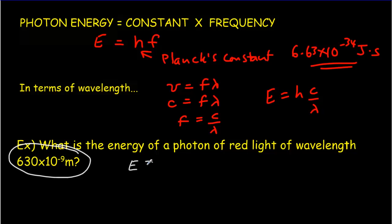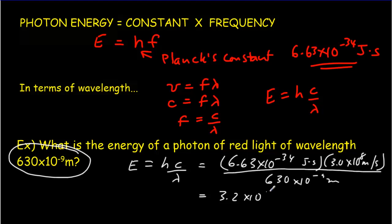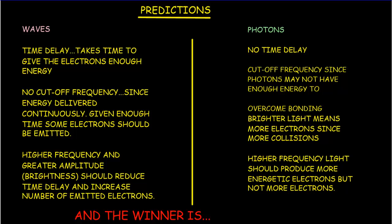In this problem, the photon energy is given by hc/λ. That's 6.63 × 10⁻³⁴ joule-seconds times c (3.0 × 10⁸ m/s), all divided by the wavelength of 630 × 10⁻⁹ meters. Carrying out that calculation gives 3.2 × 10⁻¹⁹ joules. The meters cancel with meters, seconds with seconds, leaving units of joules. You might recognize that as equivalent to 2.0 electron volts, since 1.6 × 10⁻¹⁹ joules equals 1 electron volt, so we've got 2 electron volts of energy.